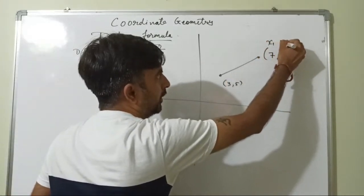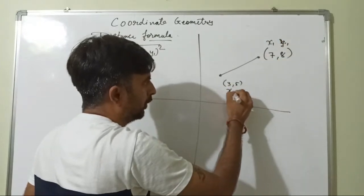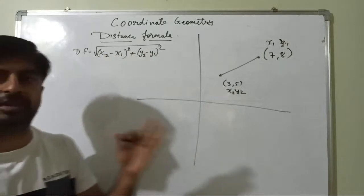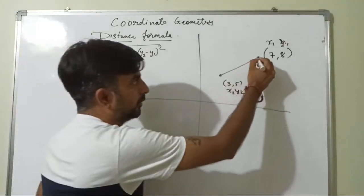Take it as x1 and y1, sorry, x2 and y2. So this is the distance formula. How they had derived this formula, that I am going to tell you. Let me tell you.